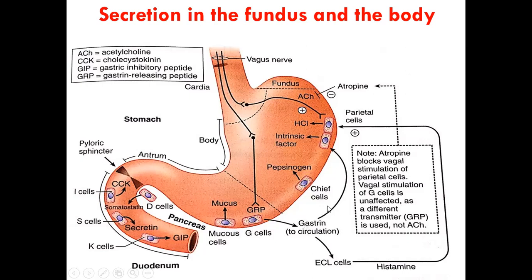Gastrin is transported by circulation to the parietal cells and chief cells to increase the production of hydrochloric acid. You can see that production of hydrochloric acid is also facilitated by gastrin from the G cells. Gastrin also stimulates the ECL cells to produce histamine, and histamine has a stimulatory effect on the parietal cells, stimulating them to produce a lot of hydrochloric acid.